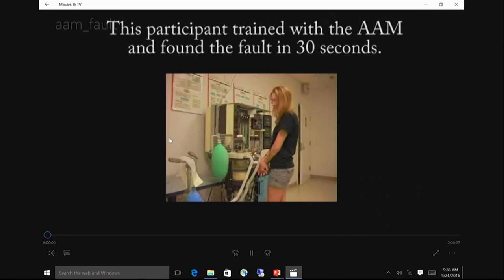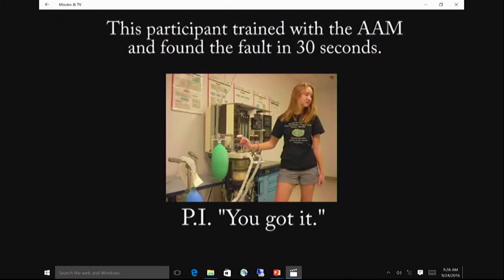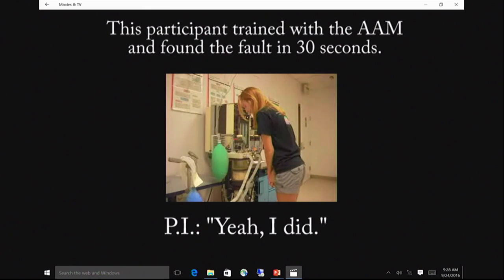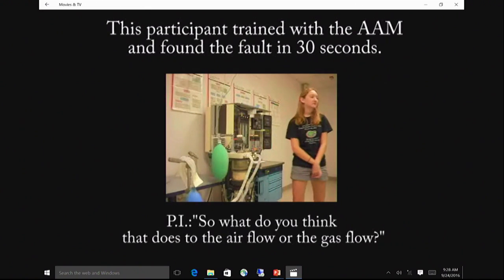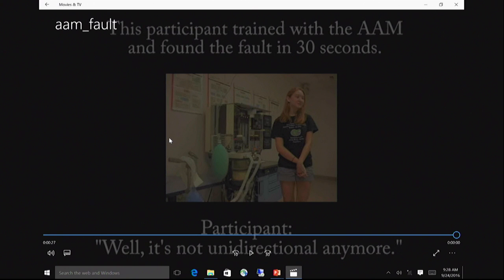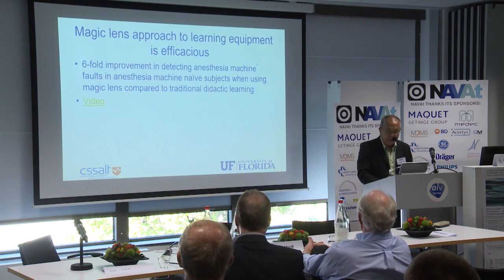Here's a video of another psychology student. We took the leaf on the inspiratory valve out. She said the leaf is missing. When asked what that means, she said it's not unidirectional anymore. This girl, 34 hours before, didn't know an anesthesia machine existed. Not only did she pick up that the valve had a missing leaflet, but she correctly identified what it meant clinically. We thought that was pretty impressive — some of our residents would probably not have come up with that answer.